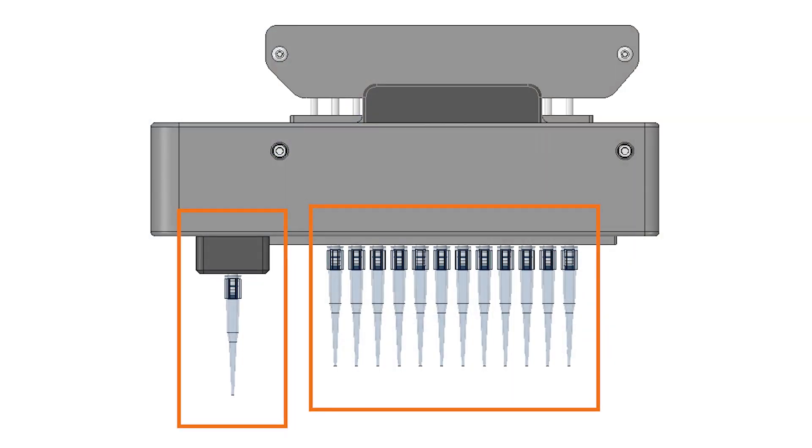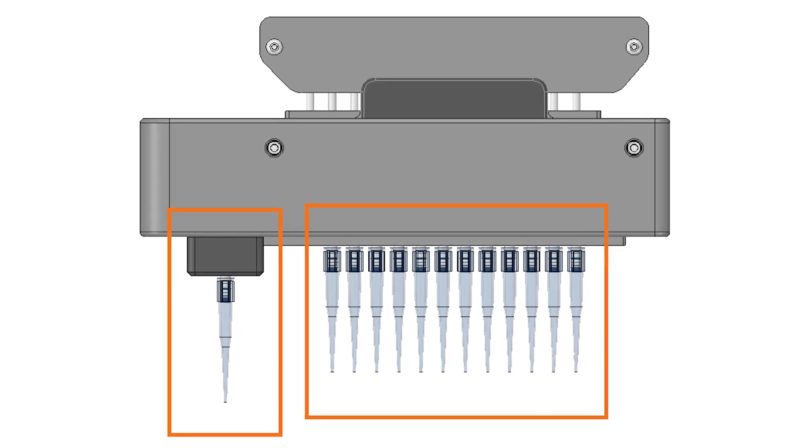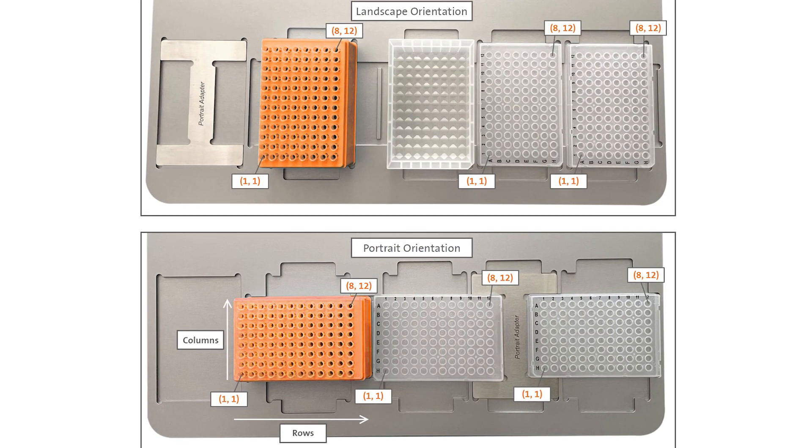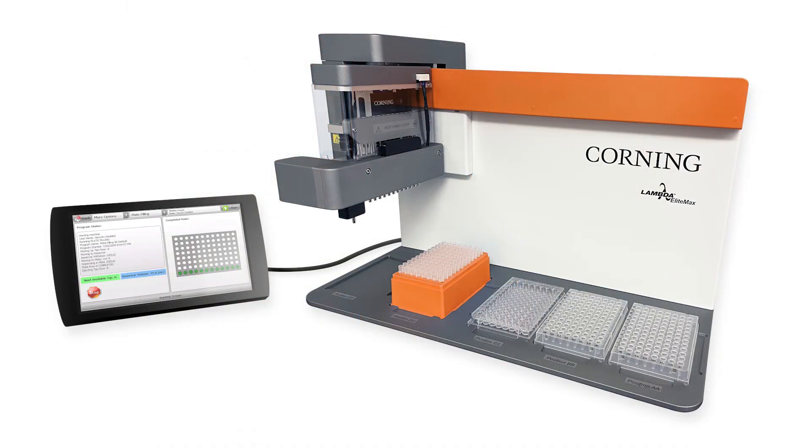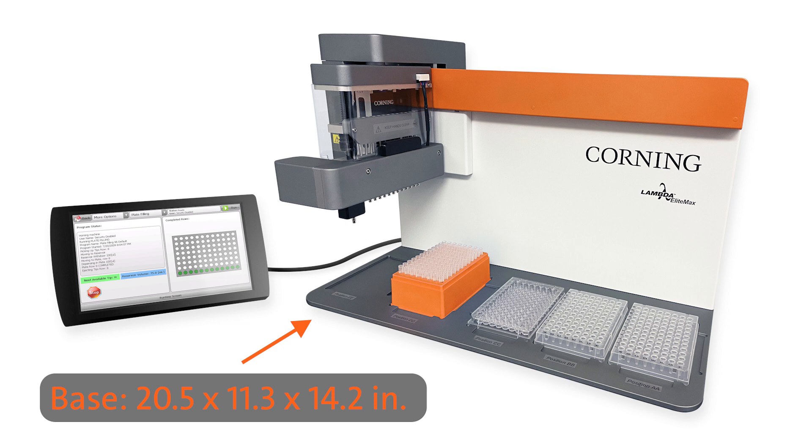This unit is designed with an integrated dual-head configuration, convertible deck seating for consumables while maintaining a small footprint. The base unit dimensions are 20.5 x 11.3 x 14.2 inches, and the touchscreen controller is 11.3 x 5.3 inches.